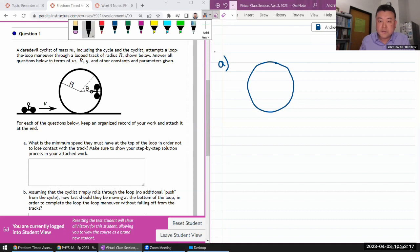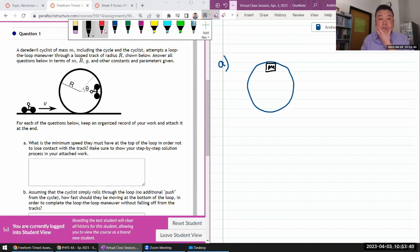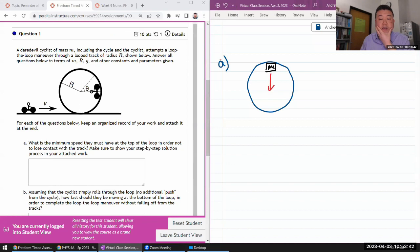So let me draw the loop so that I have something to think about. And I'm just going to represent the cyclist as a mass of mass M. And it's talking about in order to not lose contact with the track. If it's simply at rest here, it's going to fall down, just straight down. And that's not really completing a loop the loop maneuver.